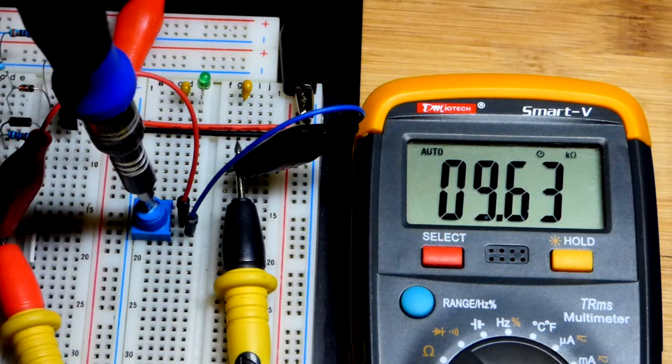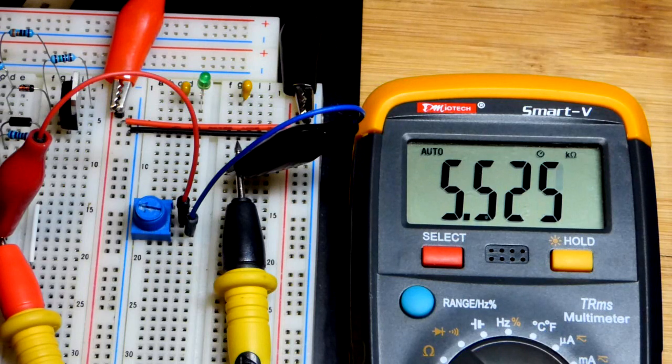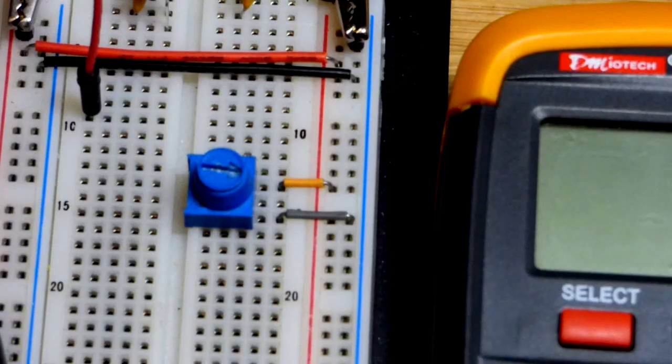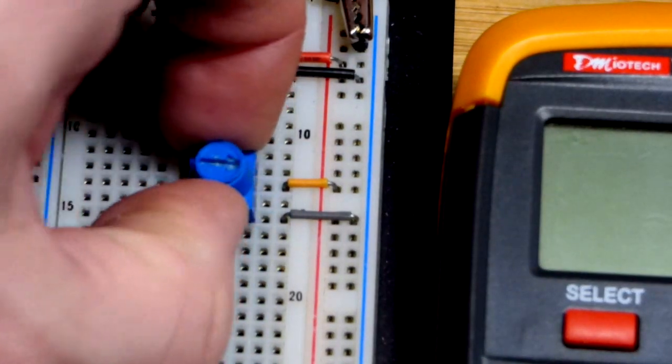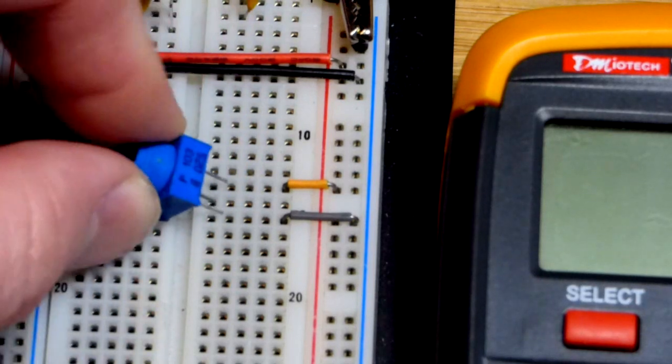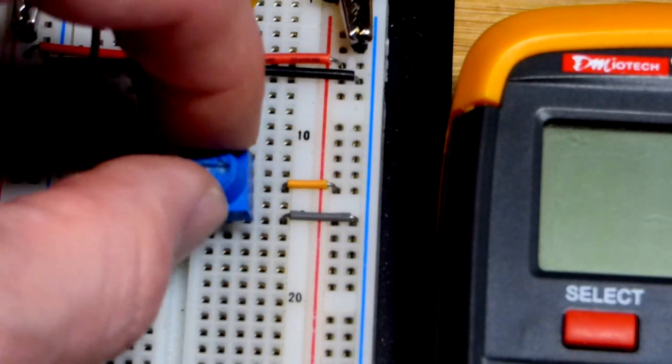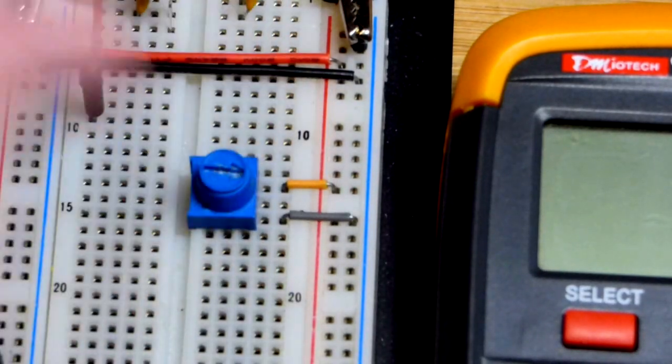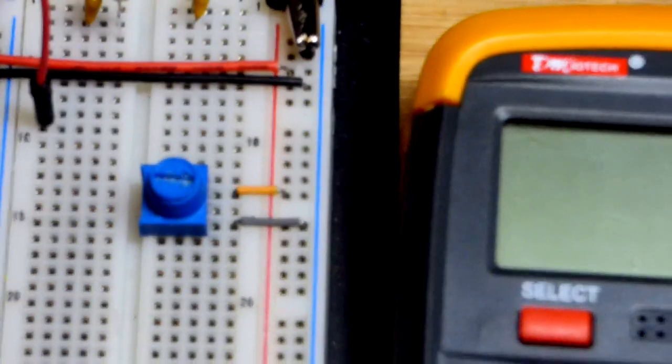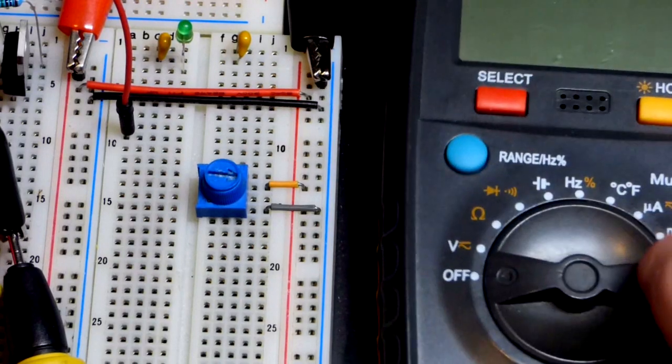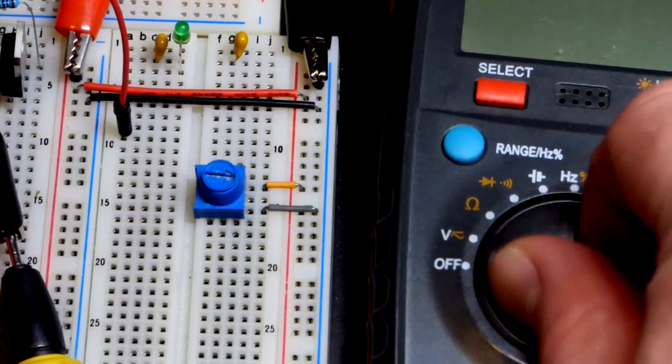So now we're going to move on to voltage dividers. Here we have it wired as a voltage divider. We got the top pin to one side of the power supply, the bottom pin to the other side, and the middle pin in the middle right there. We are going to set the meter to measure voltage, which is pretty safe for the most part. Just have to turn the dial to measure voltage right there.